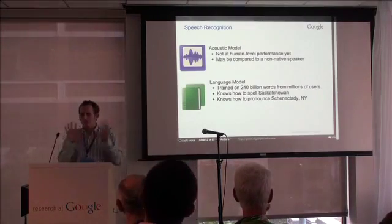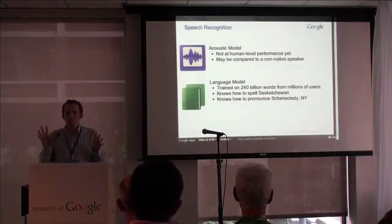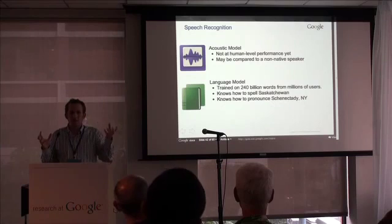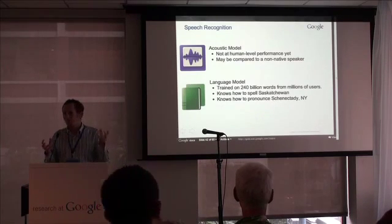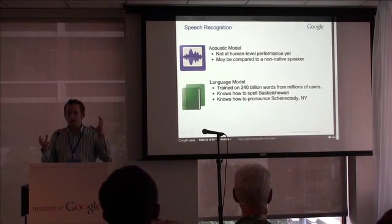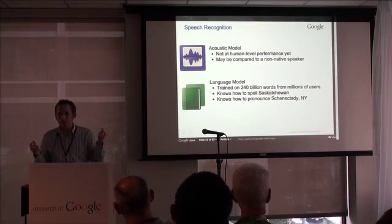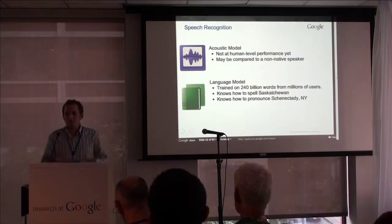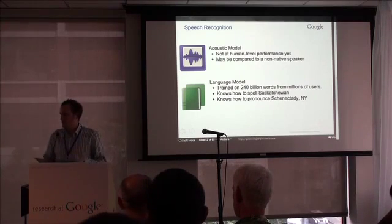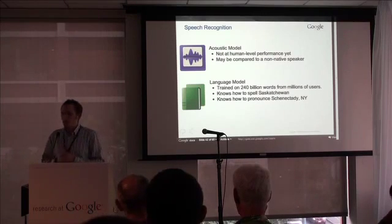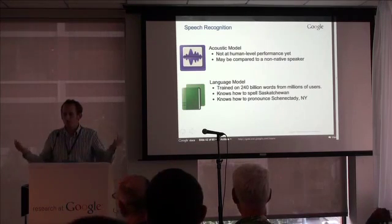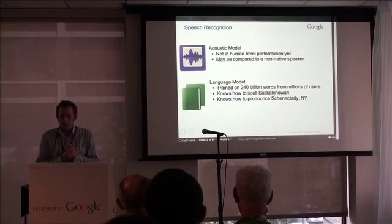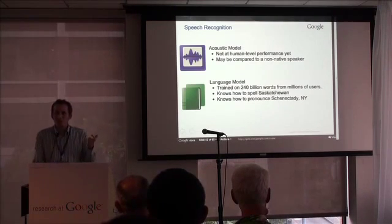So why is that? Roughly without going into details, speech recognition is two components. There is an acoustic model and a language model. The acoustic model is what recognizes the sounds, and we're not really at human performance yet in acoustic modeling. But we have this language model, and the language model is what predicts which words you're saying and in which order. Similar to machine translation, we train on huge corpora — we train on 240 billion words for voice search — and that gives us an edge that a single user might not have.